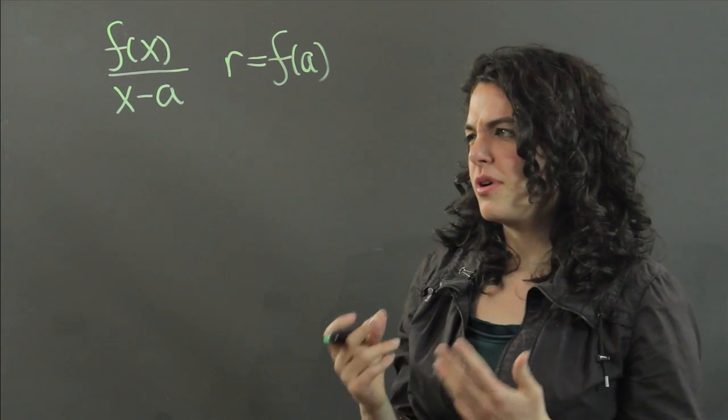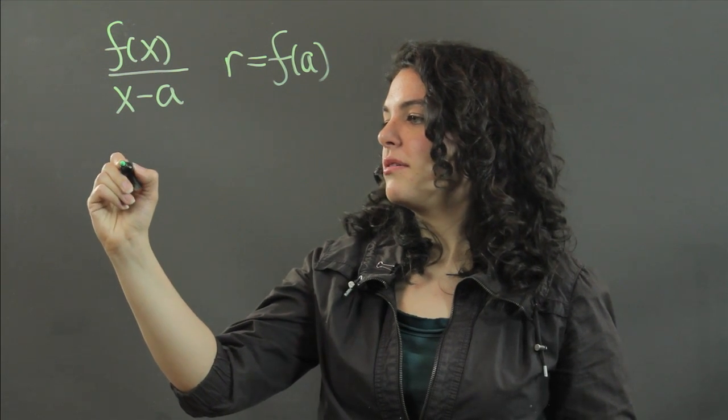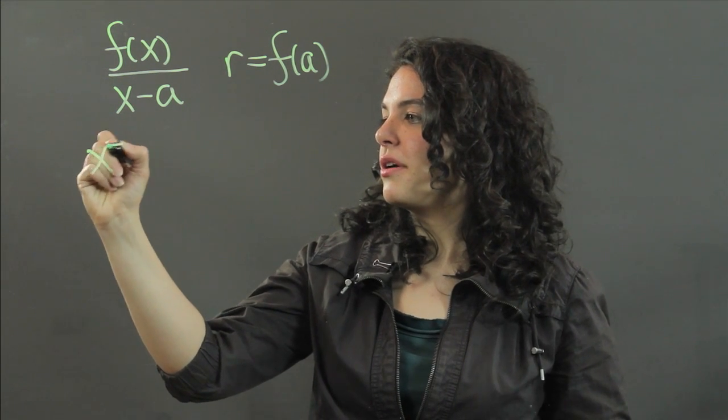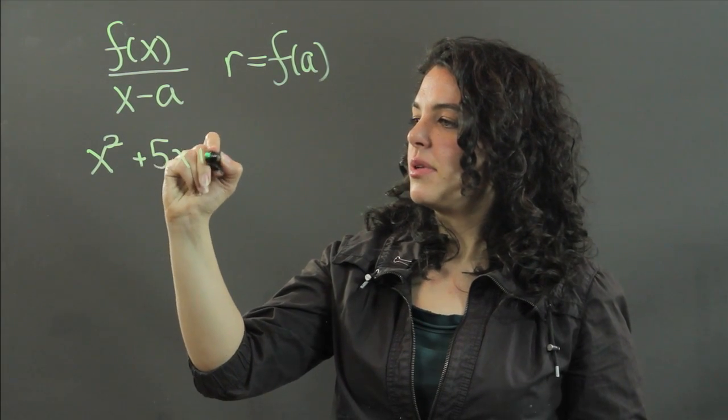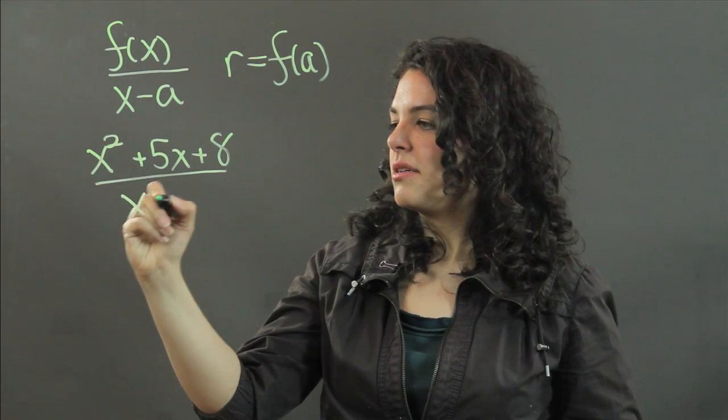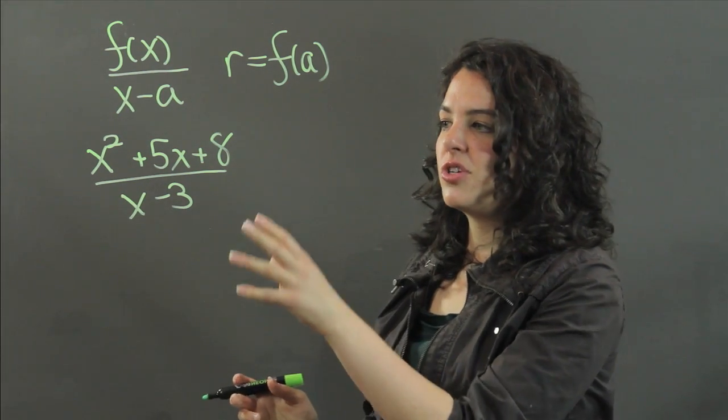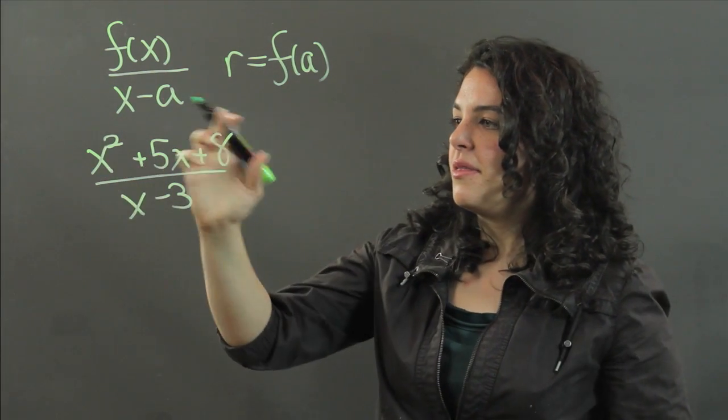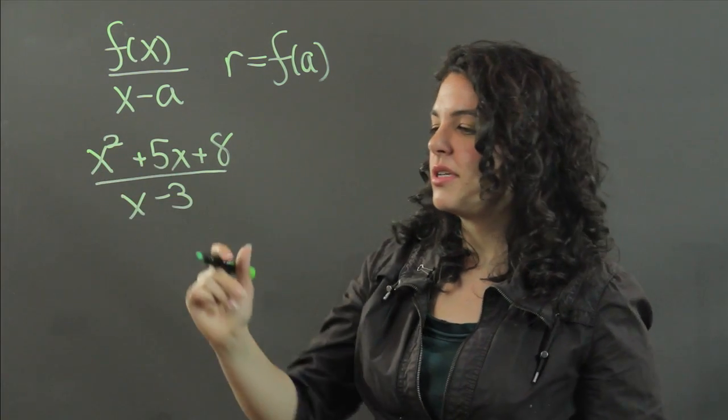So for example, if I were going to take the polynomial x squared plus 5x plus 8 and I divide it by x minus 3, whatever the remainder I get from this division will give me this equation evaluated at x equals 3. So let's do that.